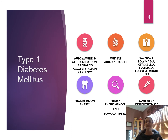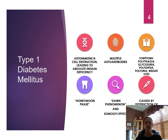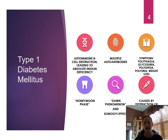Looking at type 1 diabetes, it is an autoimmune illness. The body makes autoantibodies against itself, leading to beta cell destruction in the pancreas and insulin deficiency — the pancreas does not secrete any insulin. We'll see symptoms of polyphagia, glucosuria, polydipsia, polyuria, and weight loss.